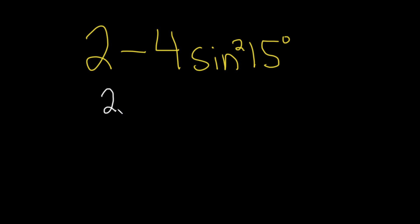So we have 2 in parentheses, and then 2 times what number gives us 2? That would be 1, and then minus 2 times what gives us all of this? Just 2 sine squared of 15 degrees. I'm going to put parentheses here because it looks better to me.